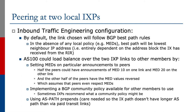We could also implement a BGP community policy which is available for other members to use. As we saw earlier, IXPs quite often recommend what this community policy might be. We could also use AS path prepends as seen earlier, with the same caveat: we need to be sure that the IX path is not longer than via the paid transit links.